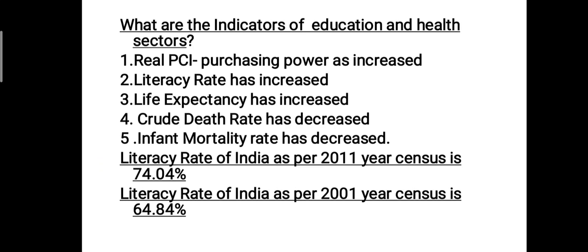First indicator is real per capita income. PCI is per capita income — per person's income. Real per capita income means the purchasing capacity or purchasing power of the people. When purchasing power of the people in the country has increased — because their income has increased — they will spend that money on education and healthcare as well.